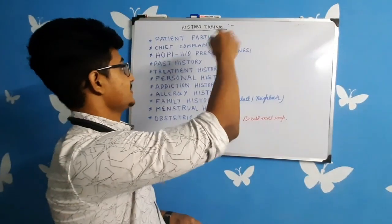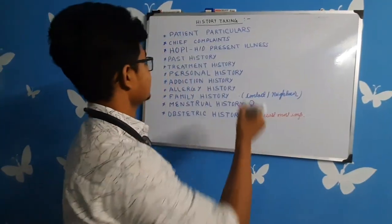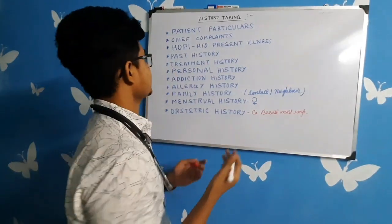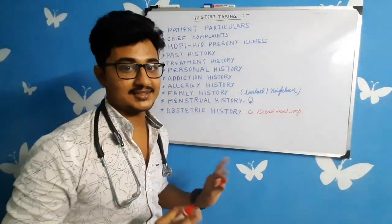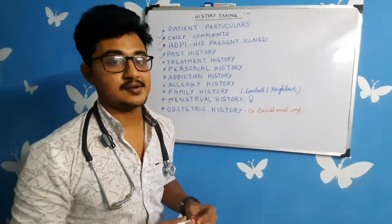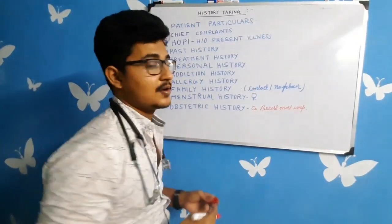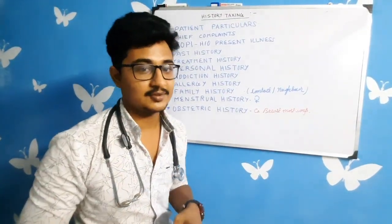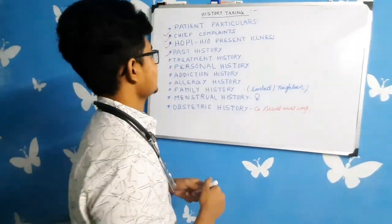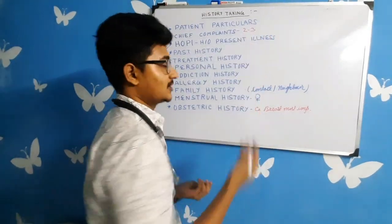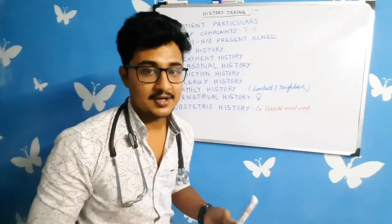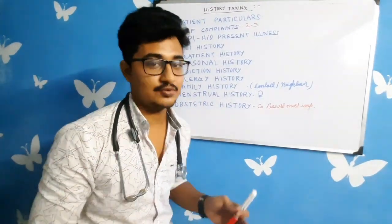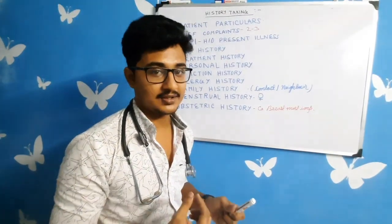Let's start the series. Coming into the basic headings under which you have to take the history. First is the patient particulars — the name and sex of the patient, basic patient identification features. From the patient particulars, you establish the patient-doctor relationship. Then is the chief complaints — maximum two to three, one is also sufficient. Chief complaint means the main complaint with which the patient presents. Out of all the complaints, you have to segregate the one or two important ones.